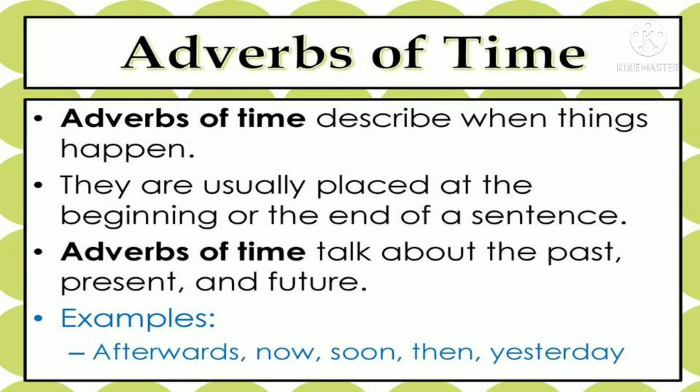Let's see the first type of adverb: adverbs of time. Adverbs of time describe when things happen. Yani ki kriyavisheshan jo time ka hai, woh batata hai ki koi bhi action ka timing kya hai. An important point: the adverb of time is placed either at the beginning or at the end of a sentence. Also, adverbs of time tell us about past tense, present tense, or future tense. Examples of adverbs of time are: afterwards, now, soon, then, yesterday, tomorrow — all these are examples of adverbs of time.